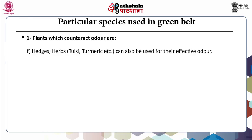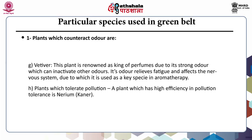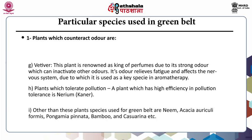Hedges and herbs like tulsi and turmeric can also be used for counteracting odor. Next is vetiver grass, a key ingredient in perfumes that inactivates other odors, affects the nervous system and relieves fatigue. It is used as a key species in aromatherapy. Next, plant species that tolerate pollution include nerium, also known as kaner. This plant may or may not have a thick canopy but has excellent results with vehicular pollution, as experimented at the National Botanical Research Institute, Lucknow.